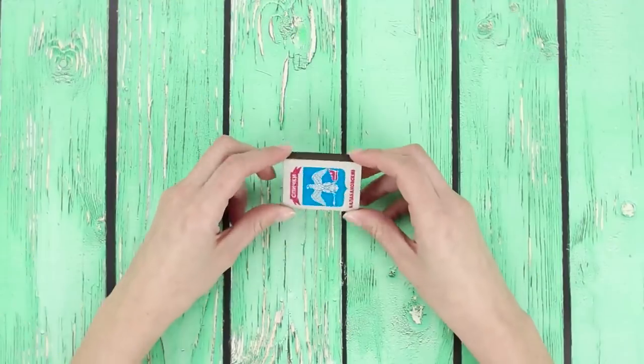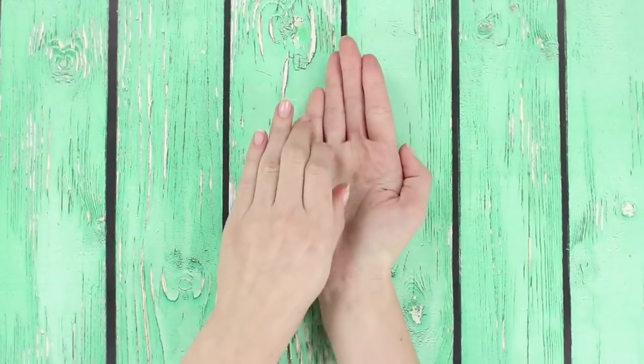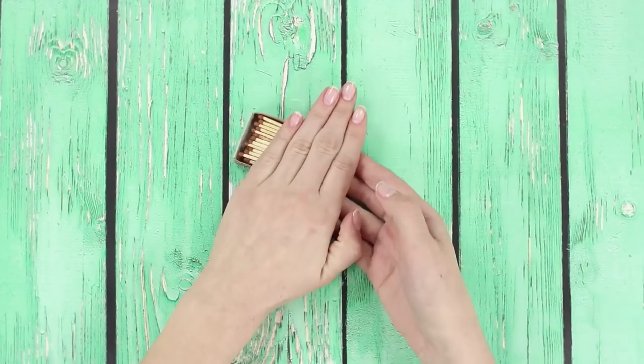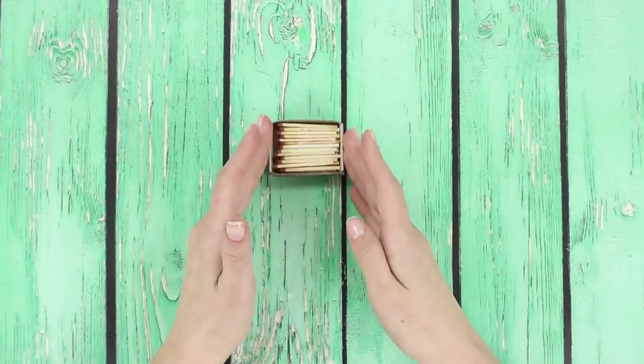Let's continue with our tricks with matches. But this time, it's the match box that's going to vanish. Cover the box with your hand. Voila! The matches are still there, but the box just disappeared. Show your hands to let everyone see that they're empty.